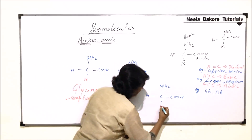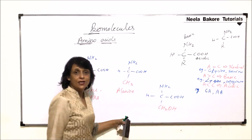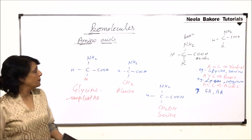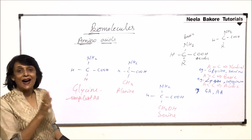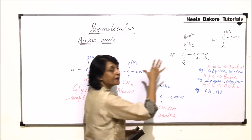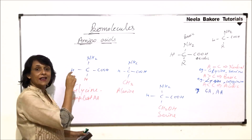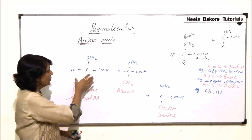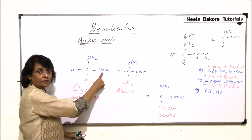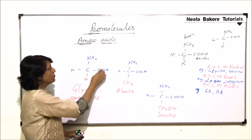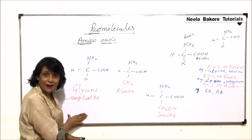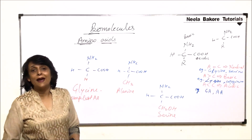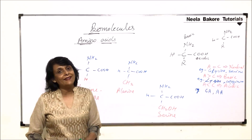If the R group is replaced by CH₂OH, then this amino acid is serine. By looking at the structure — when we write out hydrogen or methyl group explicitly, we know there is nothing else in the side chain. In the case of glycine, there is one acidic functional group (carboxyl) and one basic group (amino), so it is a neutral amino acid. Similarly, we can determine the type of any amino acid based on the functional groups present.